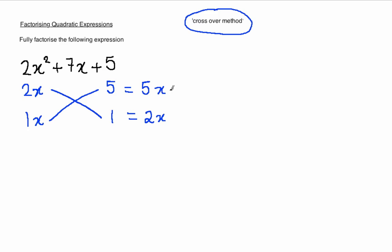The idea is that when you look at these two algebraic expressions here, they should in some way allow you to achieve a plus 7x, either by adding or subtracting. In this particular case, we can achieve a plus 7x by adding together these two algebraic expressions.